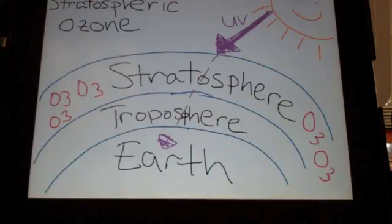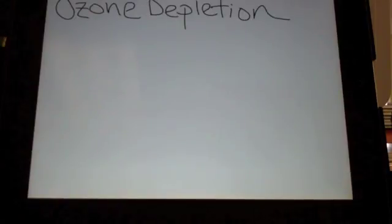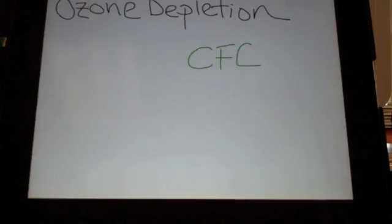Stratospheric ozone is a layer of oxygen O3 molecules that block ultraviolet radiation from the sun from reaching the earth. One of the main contributors to ozone depletion are CFCs, chlorofluorocarbons.